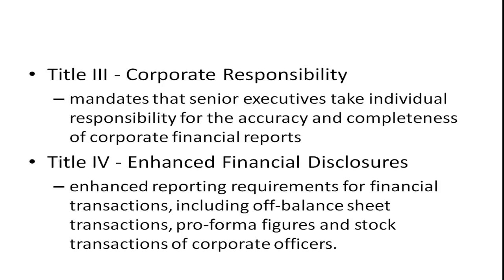Title 4 covers enhanced financial disclosures, with enhanced reporting requirements for financial transactions including off-balance-sheet transactions, pro forma figures, and stock transactions of corporate officers. Companies like Enron had numerous off-balance-sheet transactions that were difficult for analysts to understand — they might appear in a small footnote or not be reported at all, even when they imposed significant liabilities on the company.